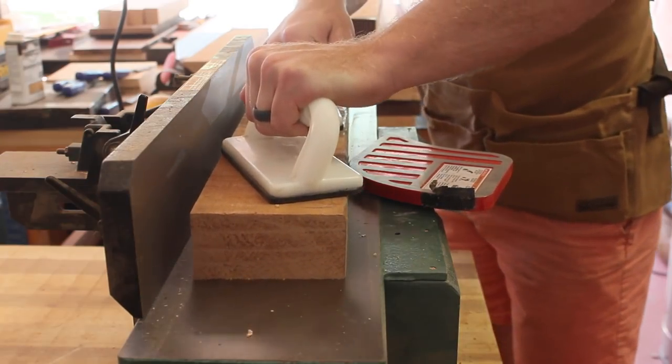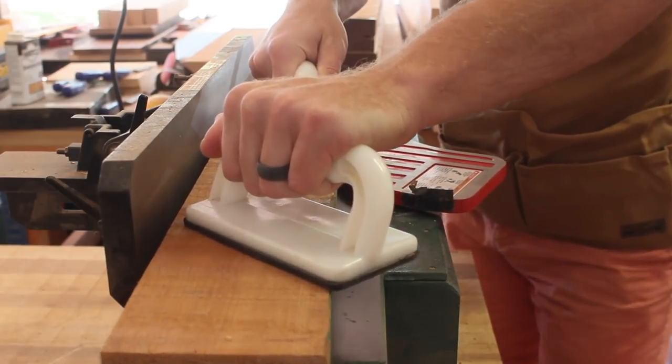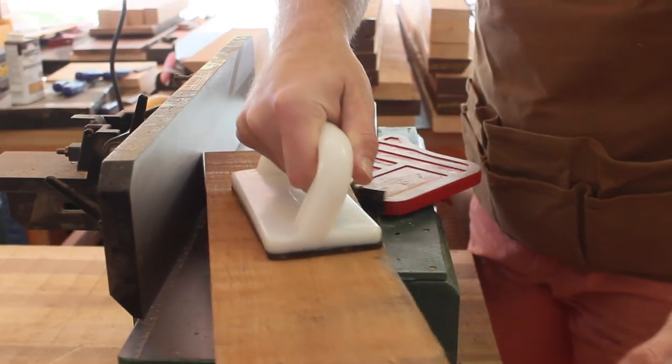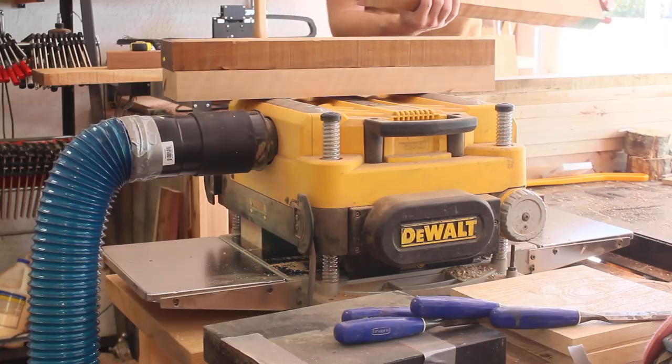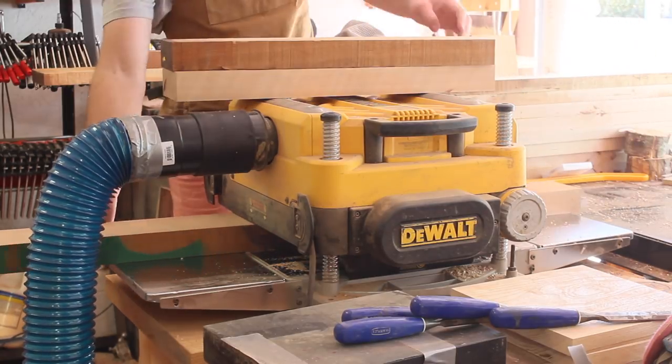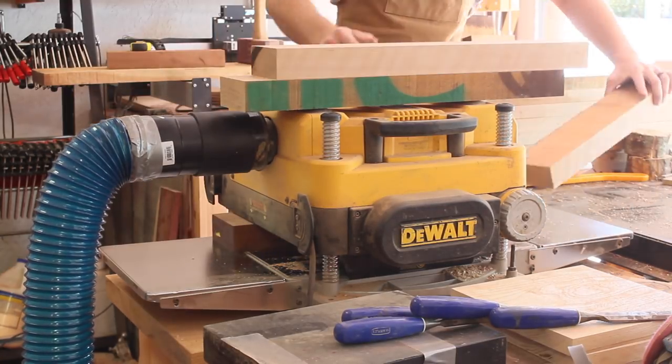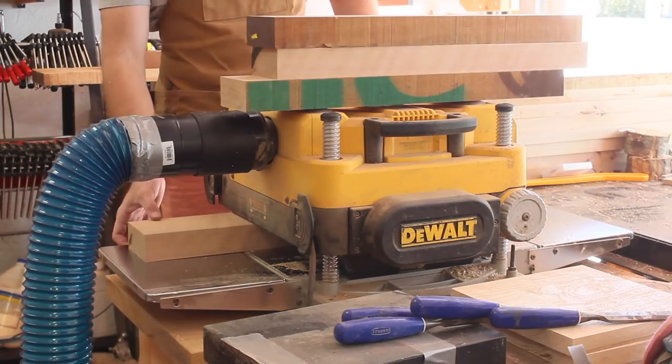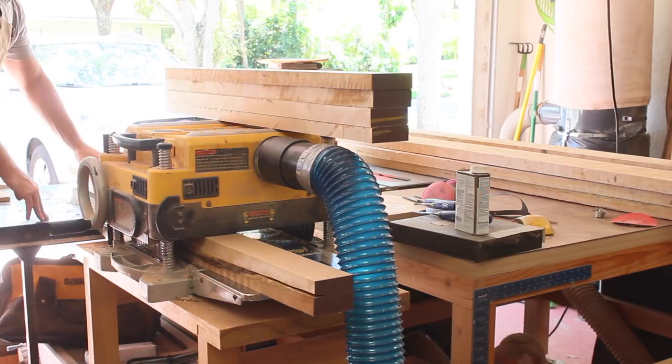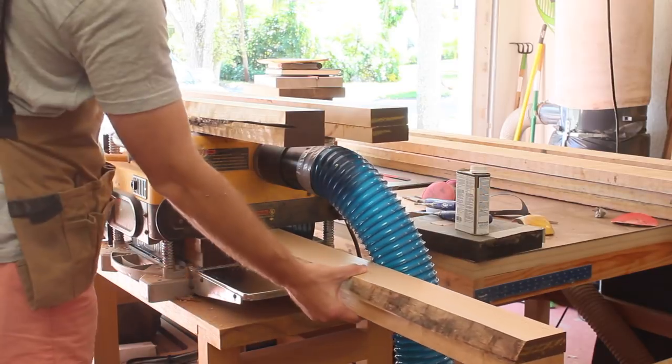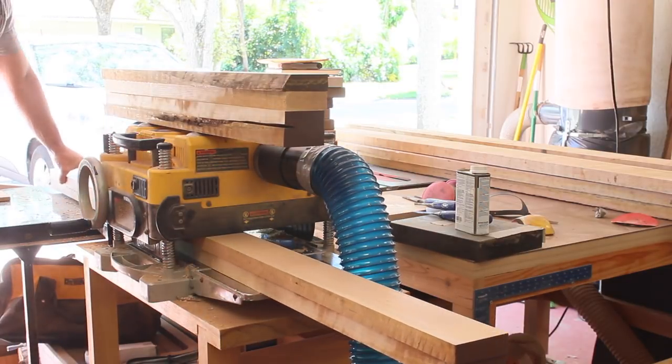I'm going through the normal milling process of jointing, planing, ripping, and cross cutting everything to its final dimensions. All of these pieces are going to get tapers later on, but I'm going to leave them in these square shapes so that I can get the joinery cut. The vertical pieces will be planed down to about an inch and three quarters, whereas the horizontal pieces will be planed down to about two and three quarters.